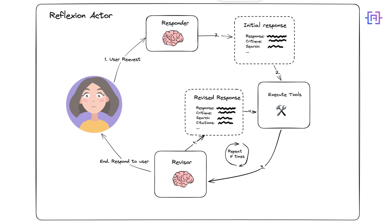Then we have the reflect step. The actor reflects on its own creation, evaluating its strengths and weaknesses. After that, we have the evaluate step. The external evaluator provides additional feedback, helping the actor identify areas for improvement. Then we have the revise step. The actor revises its work based on reflection and evaluation, incorporating feedback to enhance the quality.